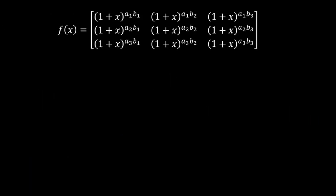So let's start. Our function f(x) is given in the format of a 3×3 determinant, which has 9 elements in total. The first element is (1+x)^(a₁b₁), the second is (1+x)^(a₁b₂), and the last, ninth element is (1+x)^(a₃b₃). Our objective is to calculate the coefficient of x. One approach is a brute force method — open the determinant directly and find the coefficient — but that will take a lot of time. So we will develop a logic instead, and use it to calculate the coefficient of x.